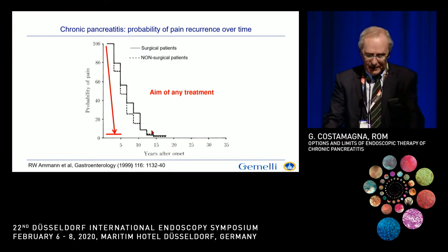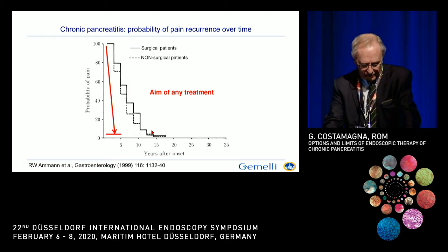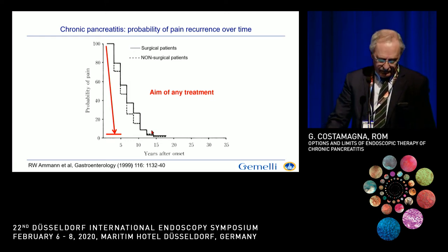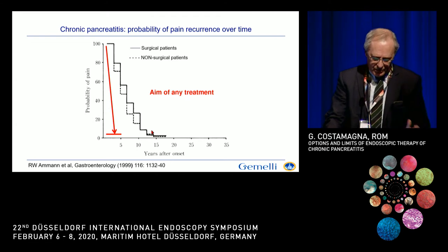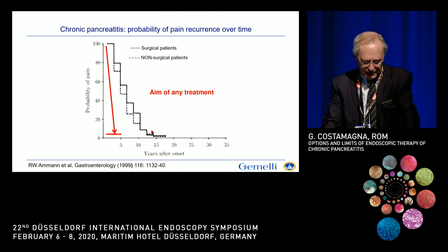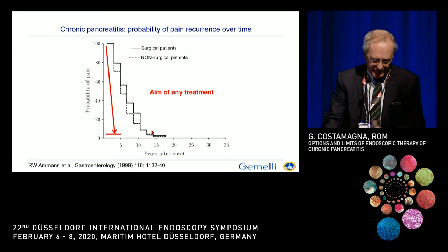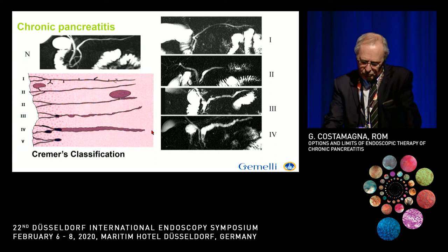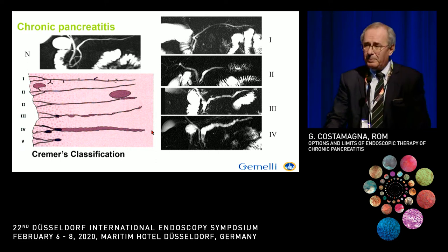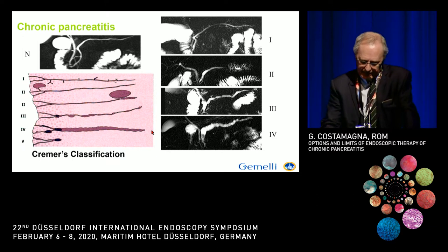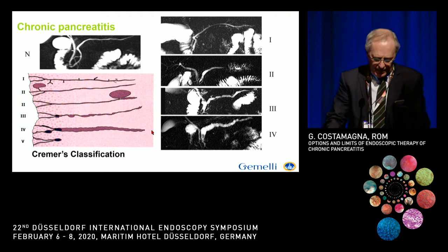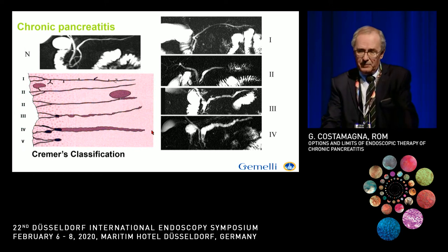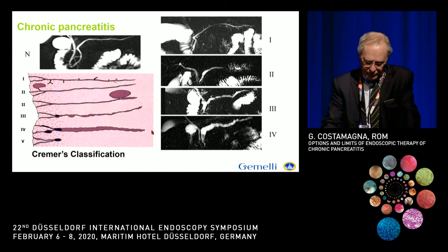The aim of any treatment is to solve the pain. In a cohort of patients treated medically or with surgery, there was not actually a very big difference between the two groups. To understand the best candidates for treatment, the classification proposed by Michel Kramer several years ago is still very useful, because the best candidates with pain for surgery and endoscopy are type IV.